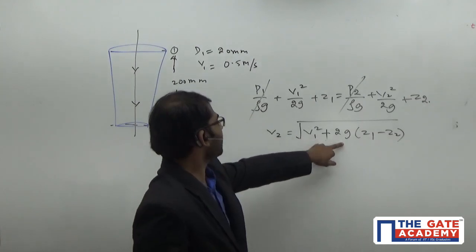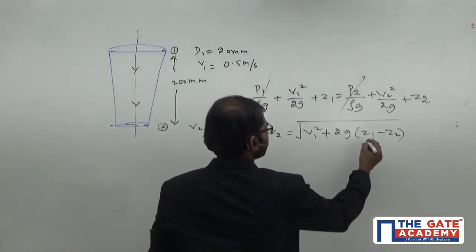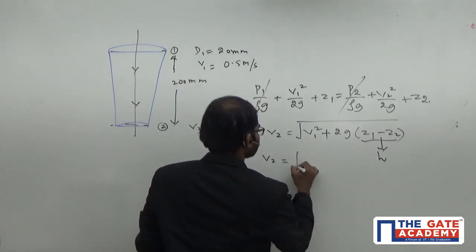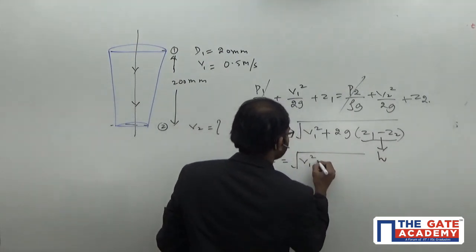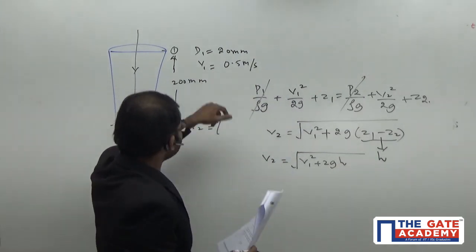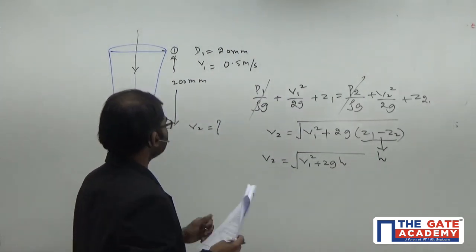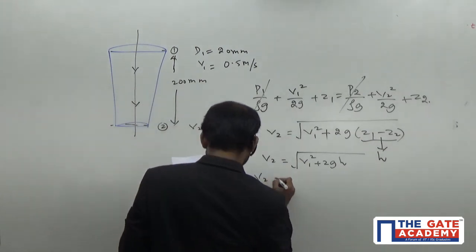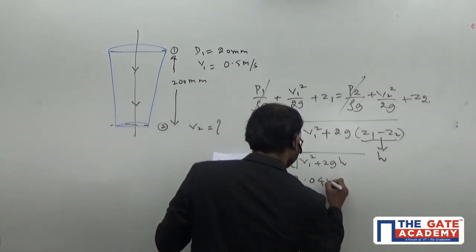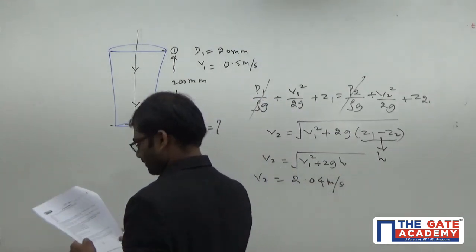Now, we substitute all the values, g value, z1 minus z2. This z1 minus z2 is nothing but h. So, it will become V2 is equal to square root of V1 square plus 2gh. If you substitute the values of V1 and h and g, you're going to get the answer of V2 as 2.04 meter per second.